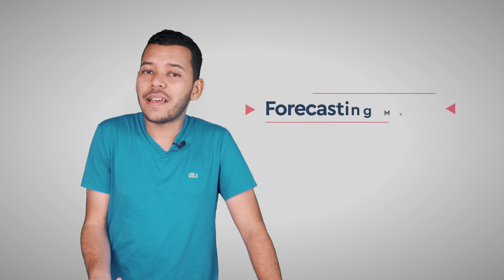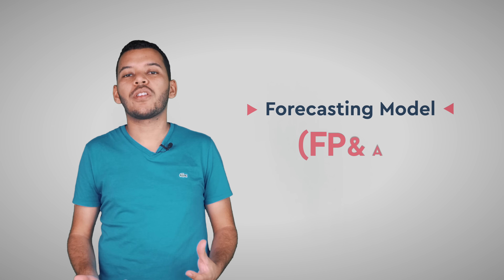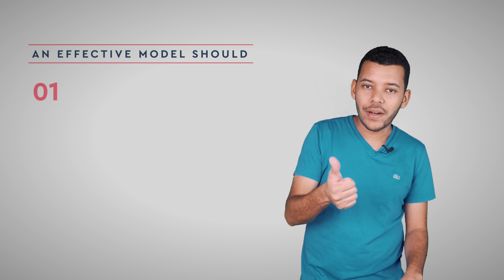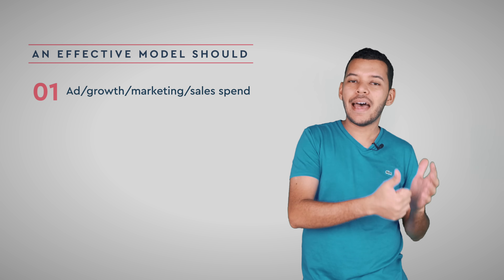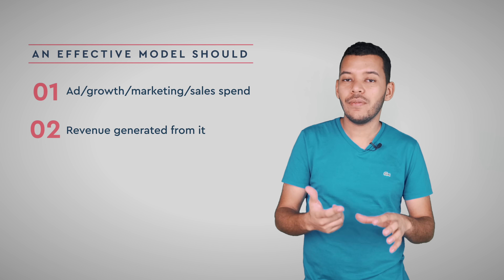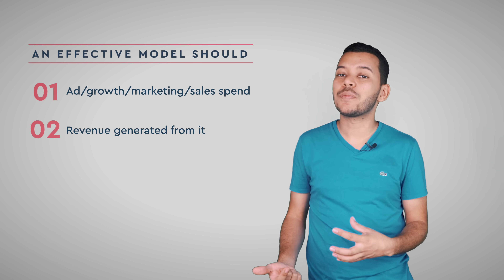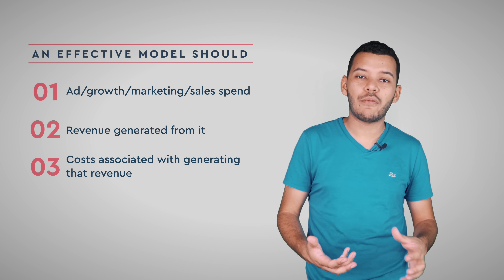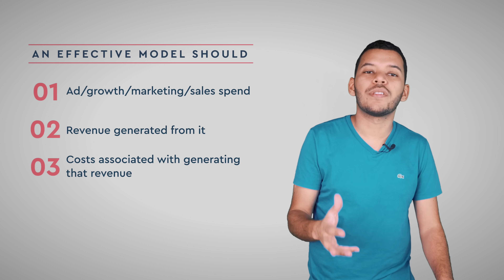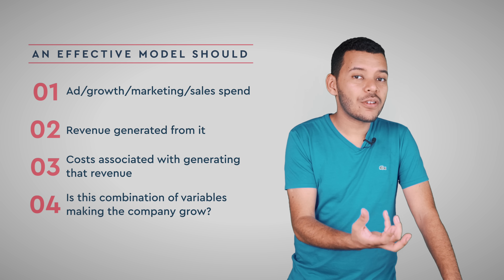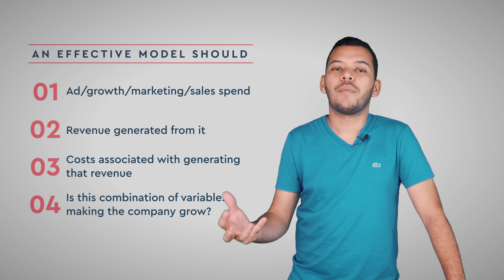There are many kinds of financial models. This one is closer to a forecasting model, which is used for financial planning and analysis. In a nutshell, what an effective model should do is: 1. Take an estimated ad, marketing, or sales spend. 2. Estimate the revenue that's going to be generated from that spend. 3. Estimate the costs associated with generating that revenue. All of this math combined should give you an answer on whether this combination of variables is going to make the company grow.